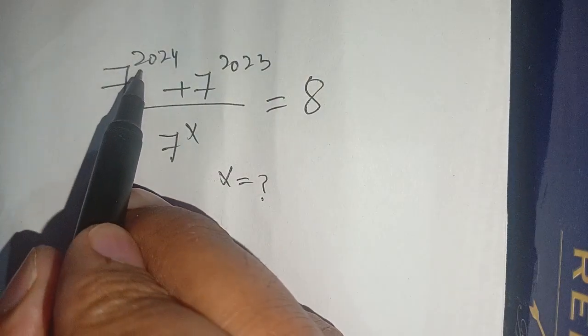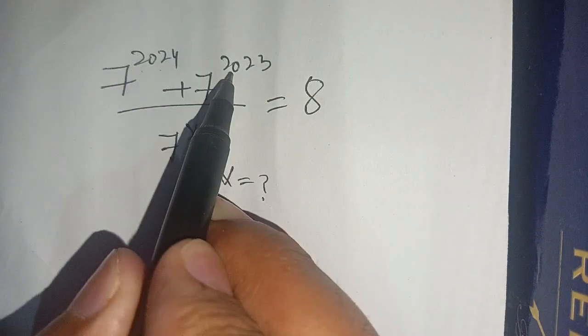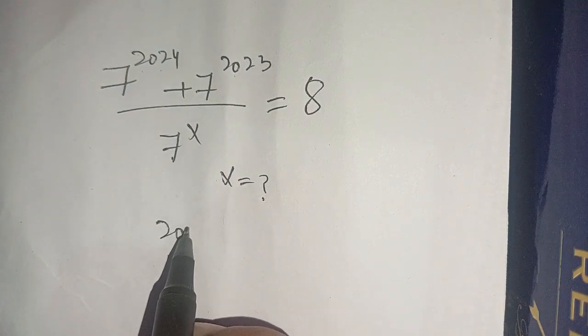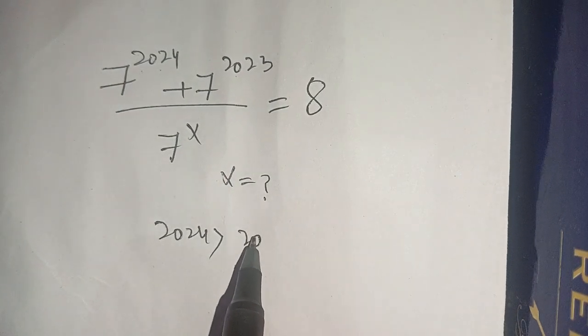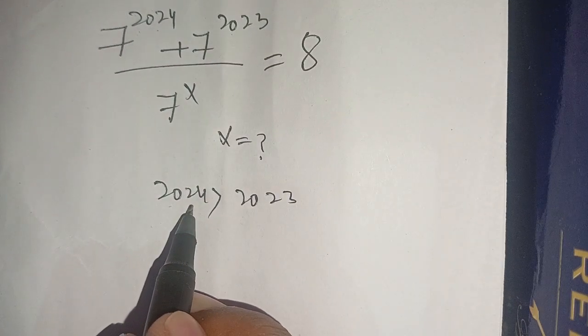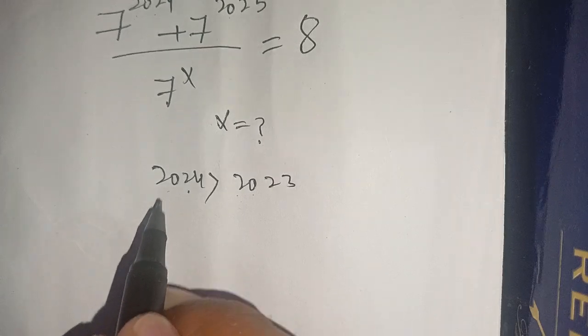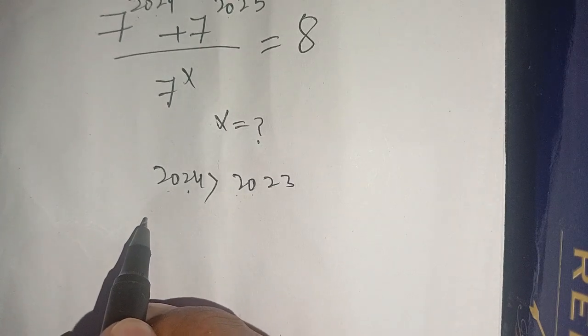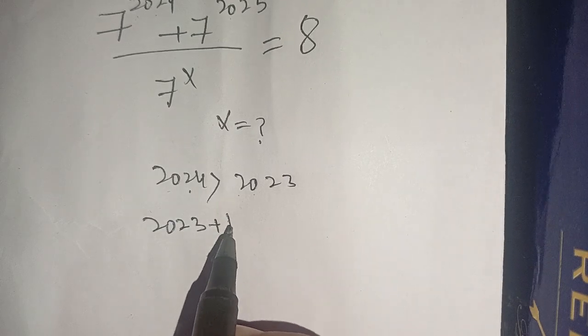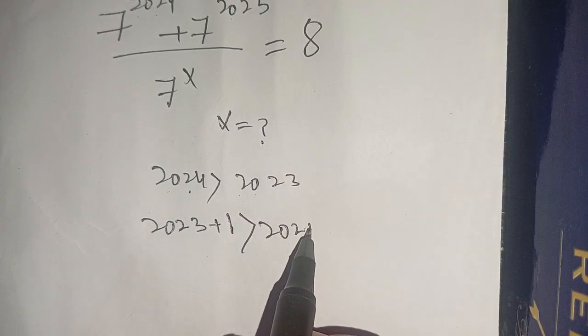Here we see that the power is 2024 here and 2023 here, and 2024 is greater than 2023, which means that 2024 can be written in terms of 2023. Thus, 2024 can be written as 2023 plus 1.